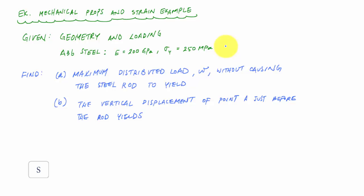And what we're going to do in this problem is determine the maximum distributed load that we can apply without causing the steel rod to yield or just before the steel rod yields. And then we'll also determine the vertical displacement of a point on the beam just before the rod yields as well.